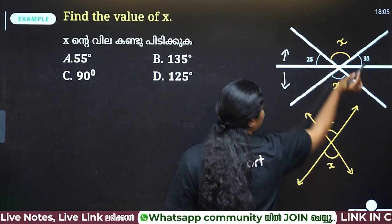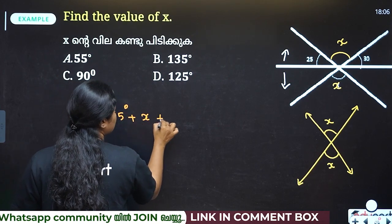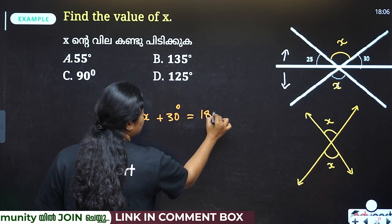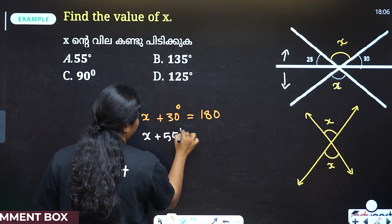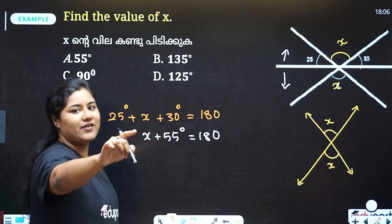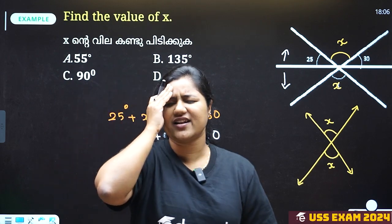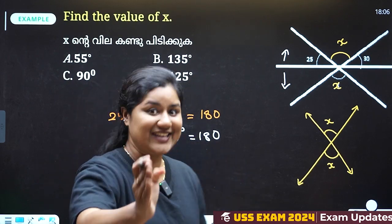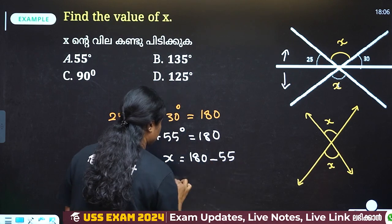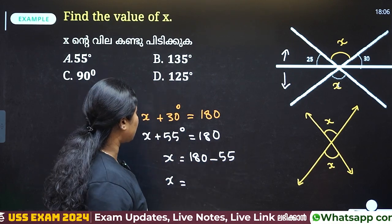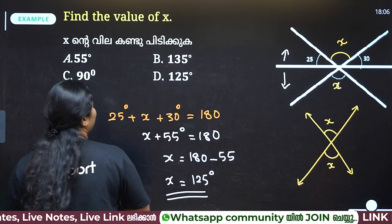25 degrees plus x degrees plus 30 degrees equals 180 degrees. If we say that 25 degrees and 30 degrees combine to give 55 degrees, then x plus 55 degrees equals 180 degrees. So x equals 180 minus 55, which is 125 degrees. Option D.